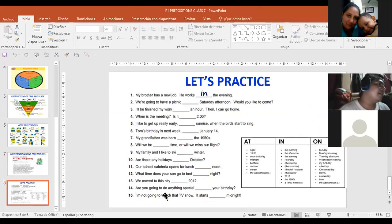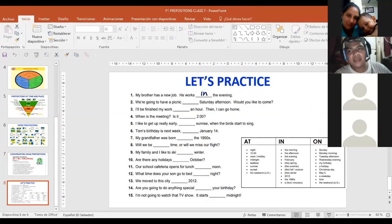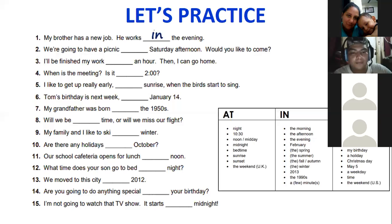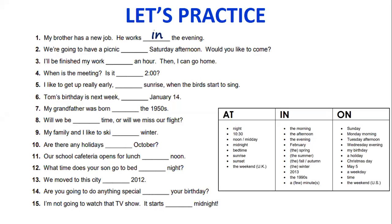Because of the time, I'm going to stop the participations here. Por el tiempo, voy a dejar las participaciones hasta aquí because I want to show you this exercise. Tenemos aquí un ejemplo. My brother has a new job. He works in the evening. Just to remind you, utilizamos at cuando decimos at night, at 10.30, at noon or midday, at midnight, at bedtime, at sunrise, at sunset, at the weekend. Cuando estamos hablando en British English.